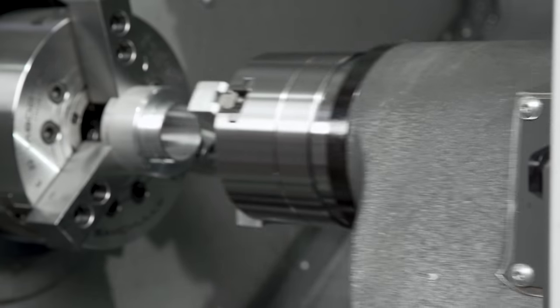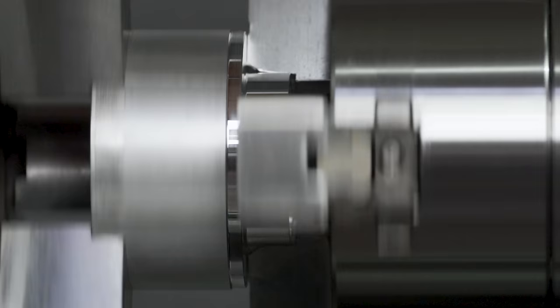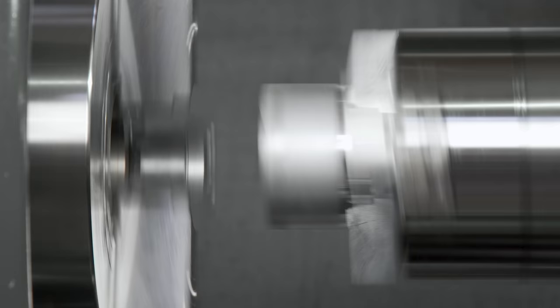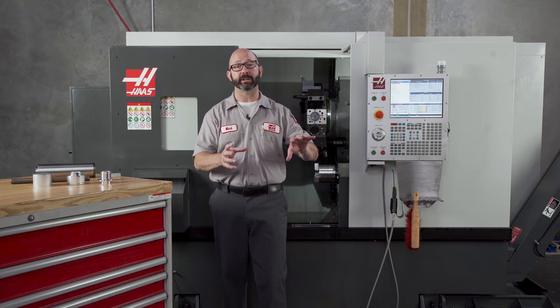Every customer who owns a Haas lathe with both a main and a secondary spindle deserves to see a G199 spindle synchronization on their very first day. It's just cool to watch, and it's at the heart of automation on these machines.